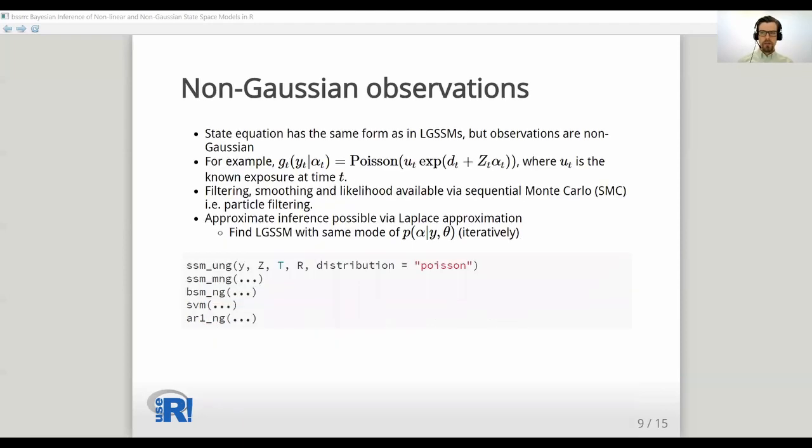Non-Gaussian observations. This is another class of models supported by bssm. Here the observations are non-Gaussian, but the states are still linear Gaussian. Model building is similar as in the previous case. We just now have to define the distributions of observations as well. bssm currently supports Gaussian, Poisson, binomial, negative binomial, and gamma models, and you can have multivariate models with mixed distributions as well. For these we can use Laplace approximation for efficient approximate inference or exact inference based on the IS-MCMC approach.